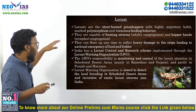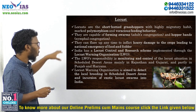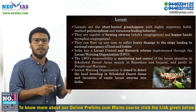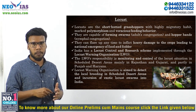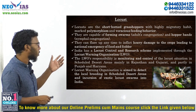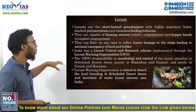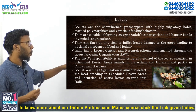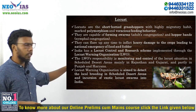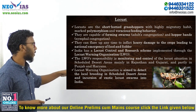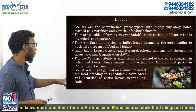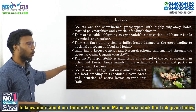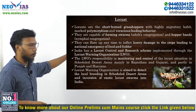Since locusts have such a severe effect on agriculture, India has a Locust Control and Research Scheme, implemented through the Locust Warning Organization (LWO). The LWO is under the Union Agriculture Ministry and is headquartered in Jodhpur. Its responsibility is monitoring and control of the locust situation in scheduled desert areas, mainly in Rajasthan and Gujarat, and partly in Punjab and Haryana. The LWO also aims to detect local breeding and the incursion of exotic locust swarms into India.